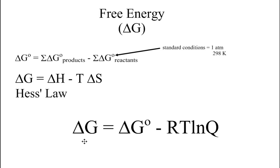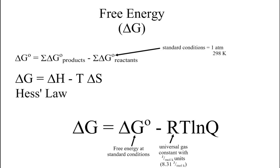For non-standard conditions, Delta G equals the free energy at standard conditions, Delta G naught, plus R times T times the natural log of Q. Delta G naught is the free energy at standard conditions. R is the universal gas constant, which in this case will be 8.31 joules per mole Kelvin. T is temperature in Kelvin.